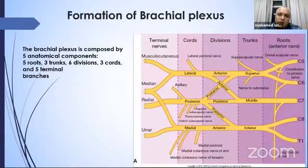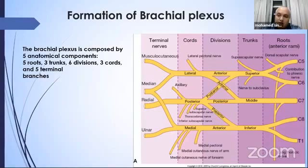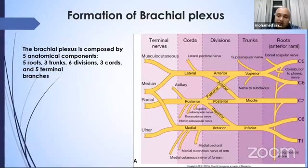The brachial plexus is formed by the ventral rami of the C5, C6, C7, C8, and T1 spinal nerves. The ventral rami form the roots of the plexus. The roots of C5 and C6 combine to form the superior trunk, C7 forms the middle trunk, and C8 and T1 form the inferior trunk.